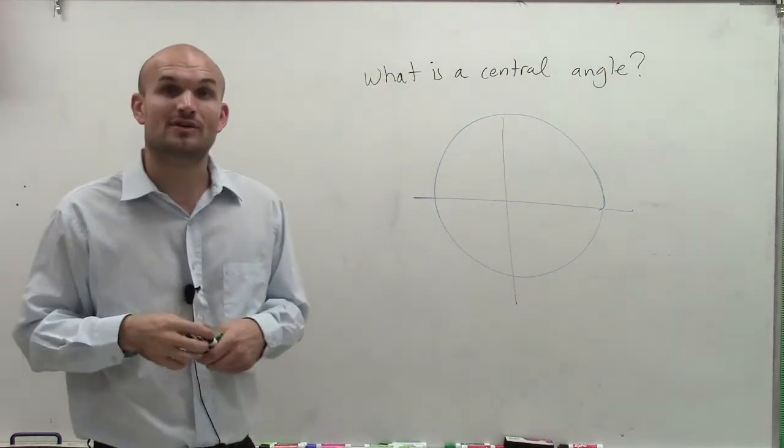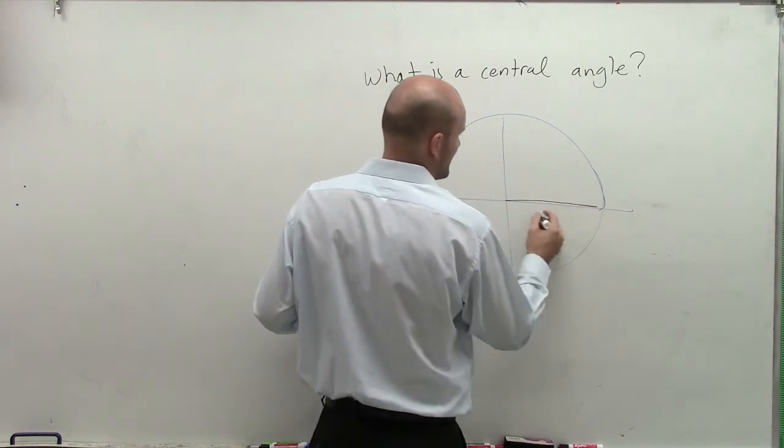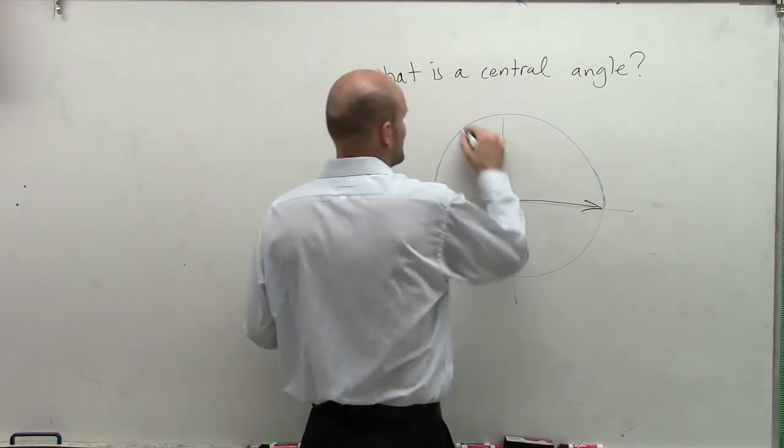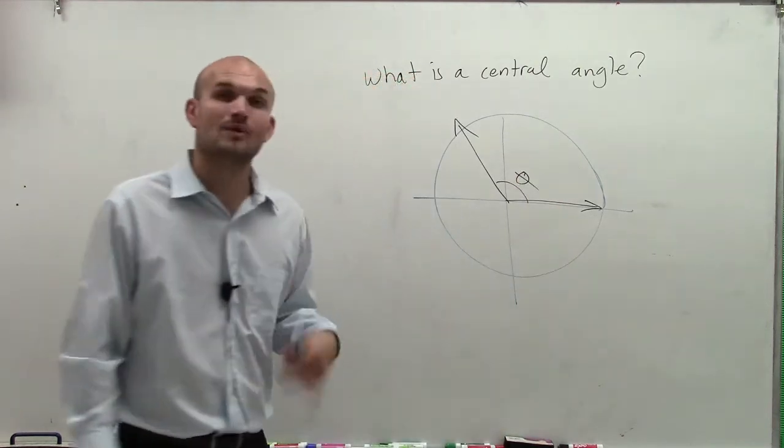It's going to be a circle that's about our vertex. We've kind of looked at that already. We've had our initial side and then we have our terminal side, right? So this angle is what we call a central angle.